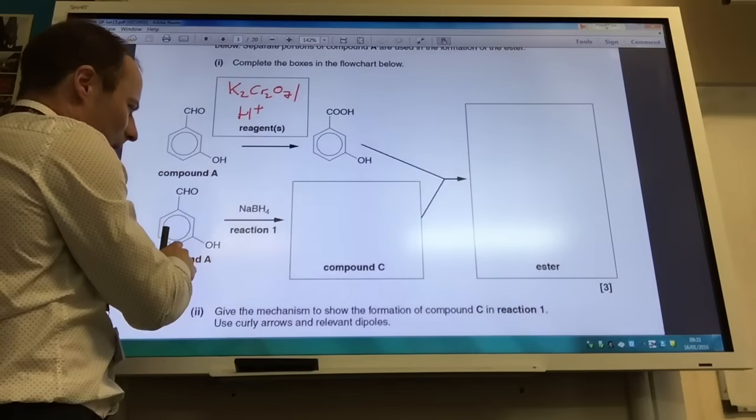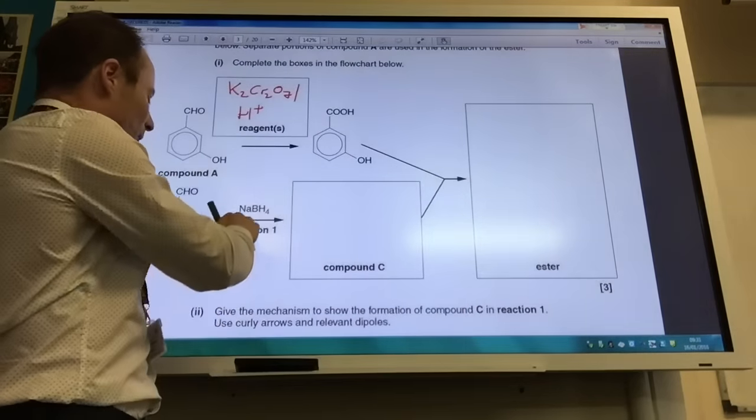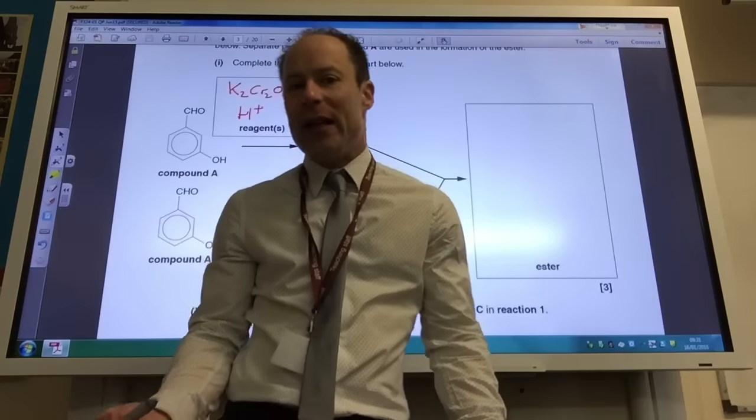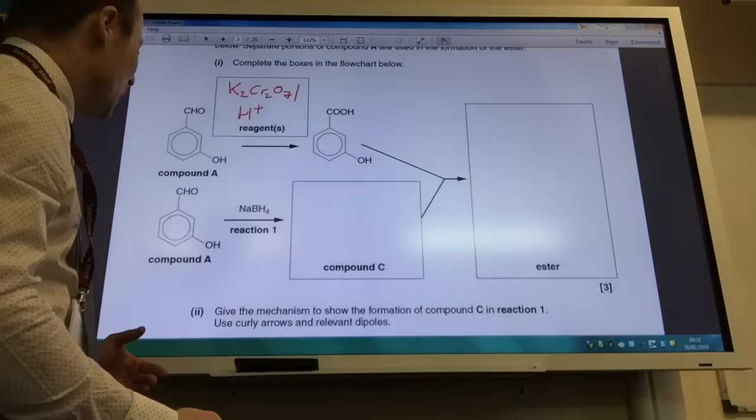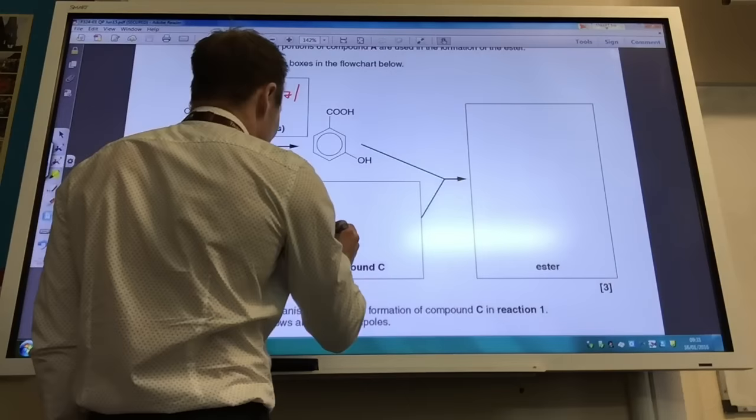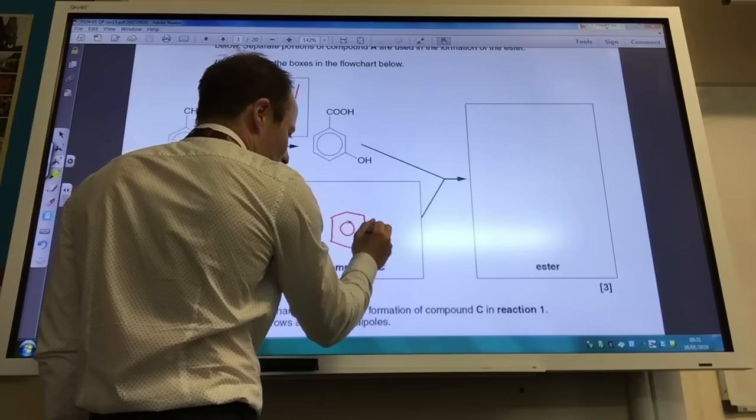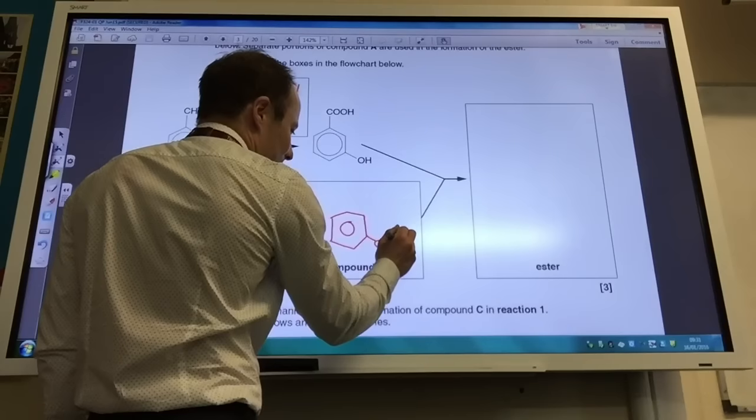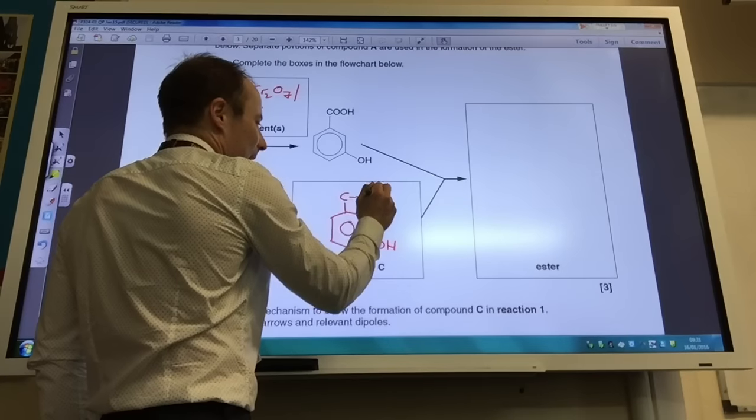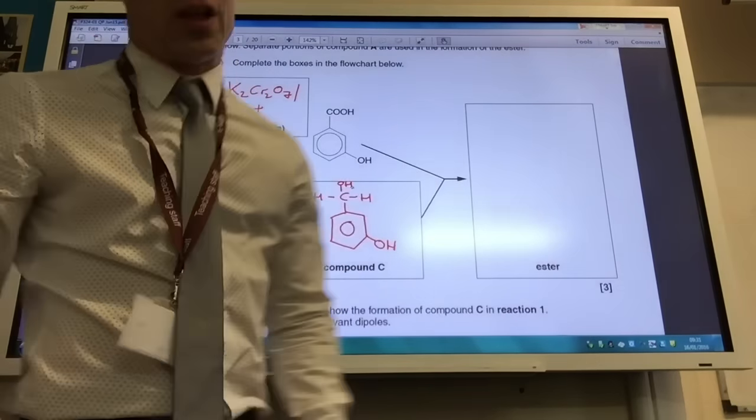Let's have a look at this one. I've got to make an ester here. So I've got sodium borohydride. What's that going to do? Well it's not going to touch the phenol. You've not been taught anything about phenols with sodium borohydride. However, you do know about aldehyde groups with sodium borohydride. So it is not going to affect the phenol group, that will remain the same. However, my aldehyde group will become an alcohol group as shown there.